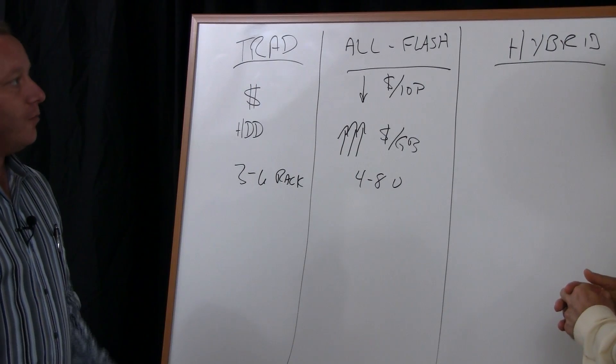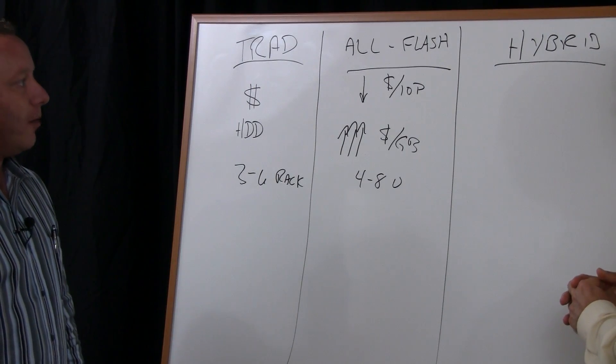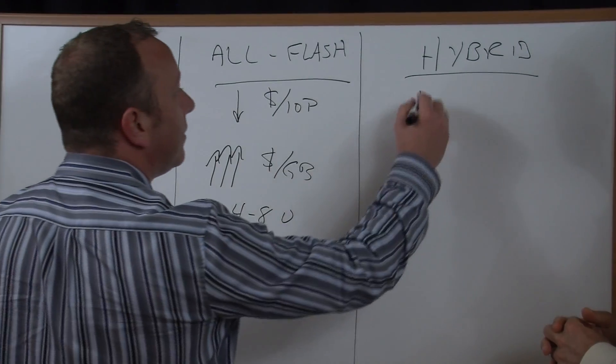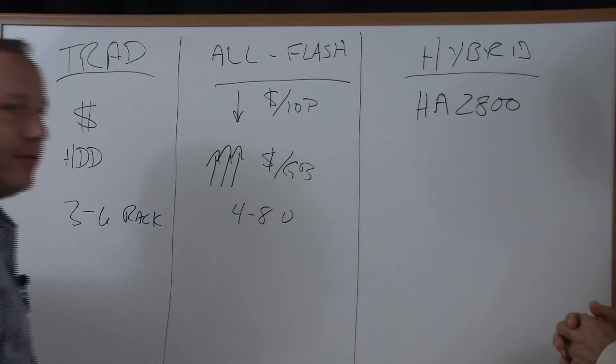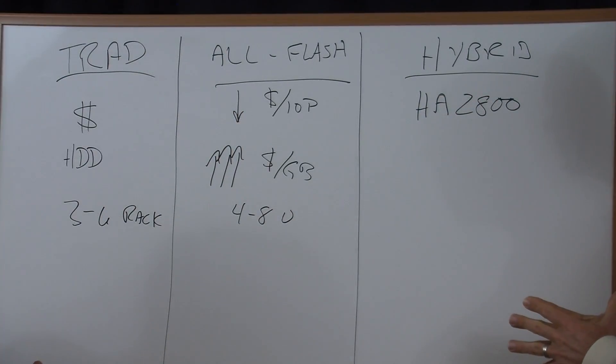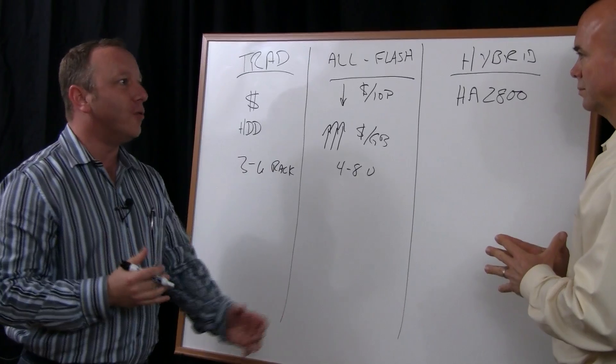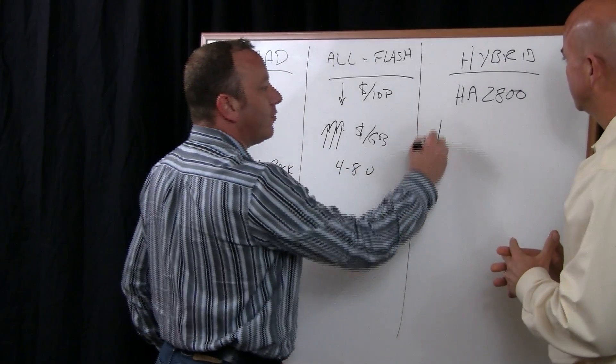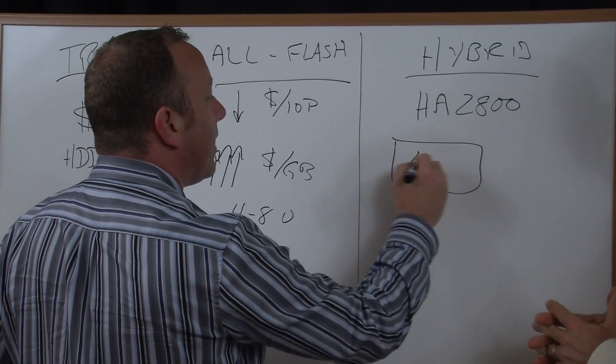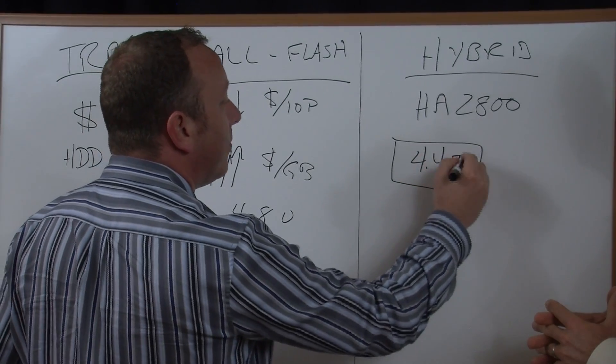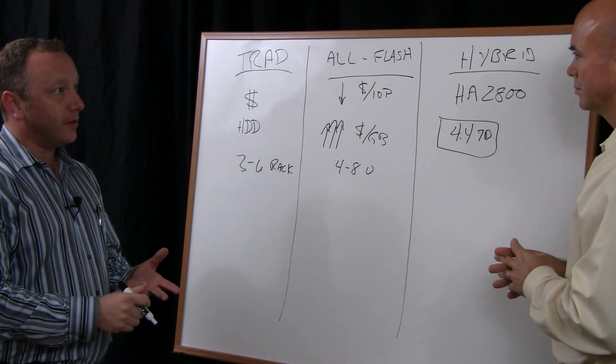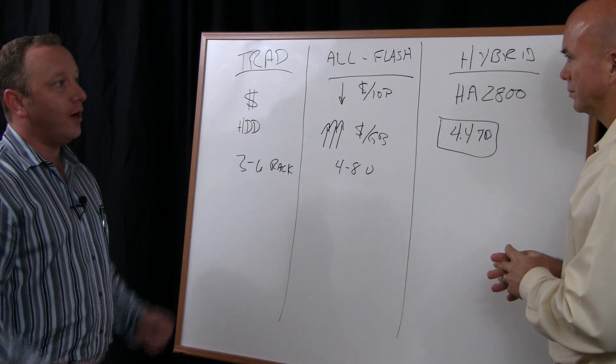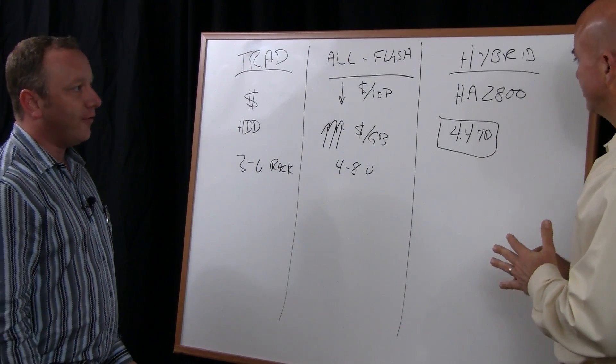And what that is, it's an all-flash array but with what we like to call a hybrid twist. So it's a 4U box that's got 4.4 terabytes of flash. With dedupe and compression, we can yield up to about 12 to 15 terabytes of flash.